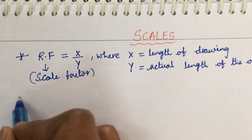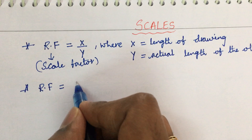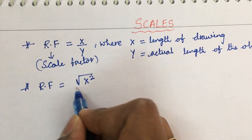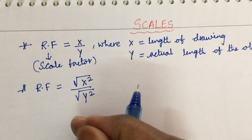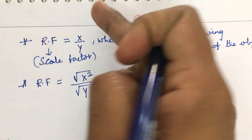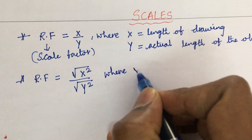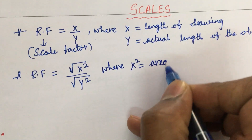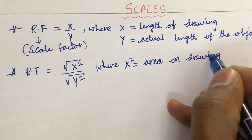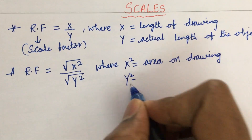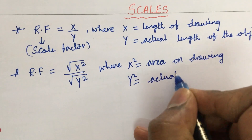That was for length. If the question involves area, the RF formula changes: you take the square root of x² over y², converting the area values to linear in order to work out the RF. So whenever area is given — for example, area on a map or distance between two railway stations given as area — your RF must be expressed as √(x²) / √(y²).